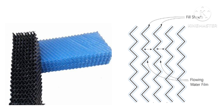From the name we can see that in film type fills, a film of water forms on the surface. The purpose of fitting fills in a cooling tower is to increase the surface area of water so that more air comes in contact with the water and cooling tower efficiency increases. Cooling tower efficiency is directly proportional to contact between air and water.